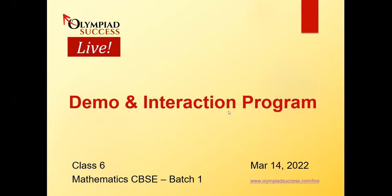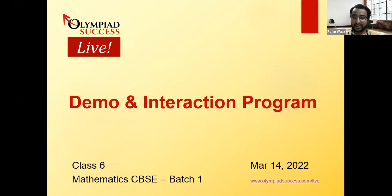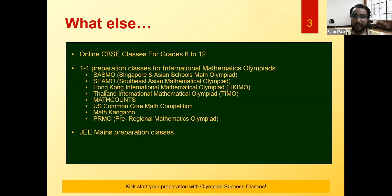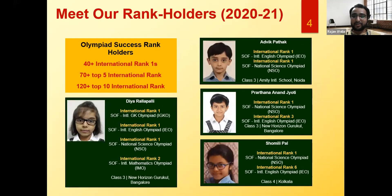Welcome to the Class 6 Mathematics CBSE course. Olympiad Success is India's largest online platform for Olympiad exams. We have Olympiad live classes — India's first exclusive live classes for Olympiad preparation. In our School Plus Program we have eight courses: Mathematics, English, Logical Reasoning, Science, Communication, Spoken and Written, Vedic Maths, and Coding. We also offer online CBSE classes for Grade 6 to 12 and International Mathematics Olympiad preparation.